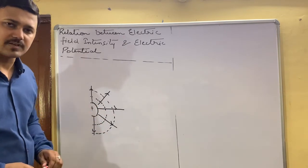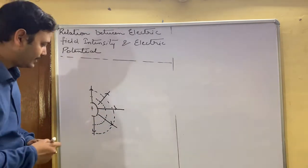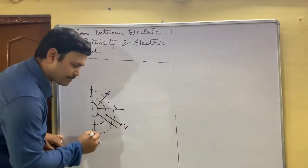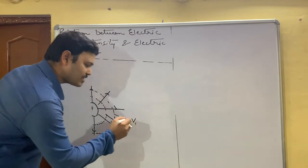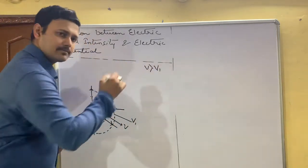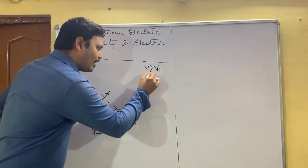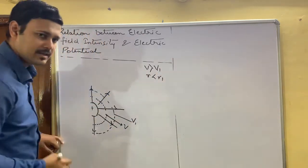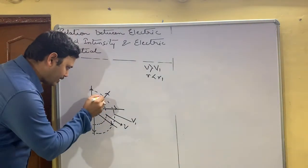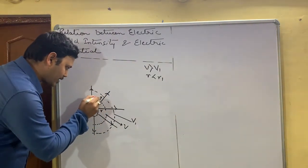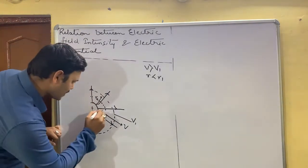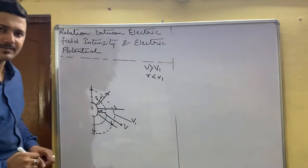We have already studied that if the equipotential at this surface is V and the potential at this surface is V1, then the value of V is greater than V1 and the value of R is less than R1 if we consider this as R and this as R1. So we can see this distance as R1 and this small distance as R.